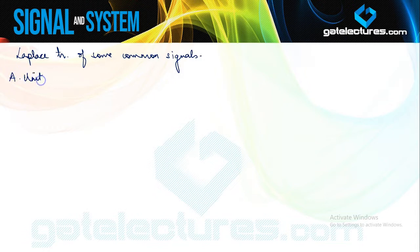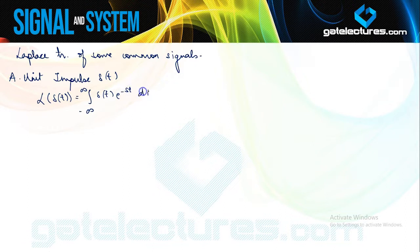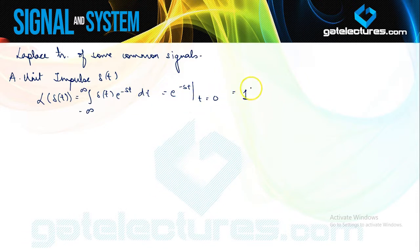Firstly we start with the unit impulse signal, delta(t). Using the basic definition, Laplace of delta(t) is the integration from minus infinity to infinity of delta(t) · e^(−st) dt. Using the sifting property of the impulse function, this becomes e^(−st) evaluated at t=0. Since the impulse occurs at t=0 and t=0 is included in the limits, the value is 1. So the Laplace transform of the impulse function is 1, and the ROC is all values of s.